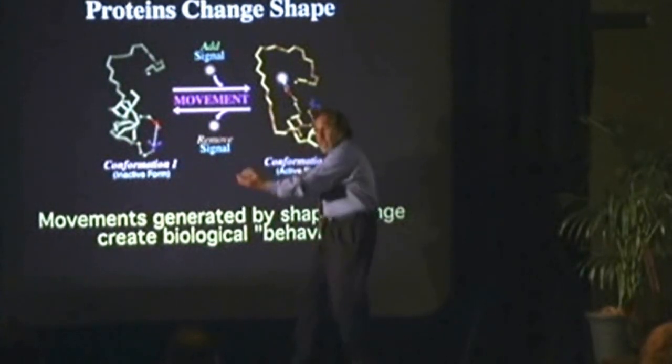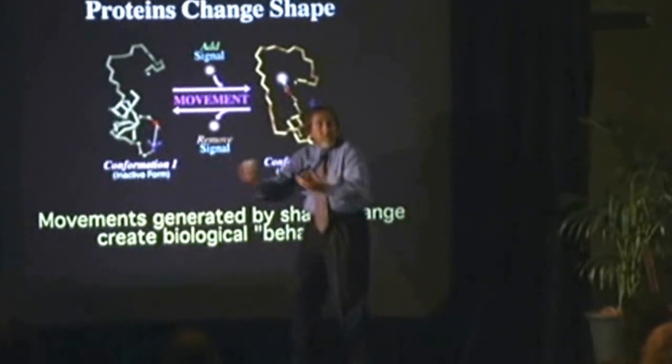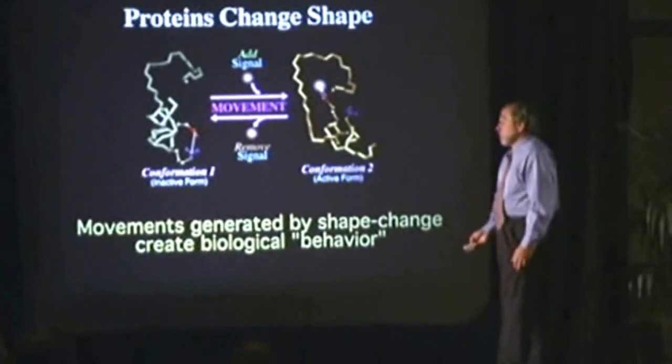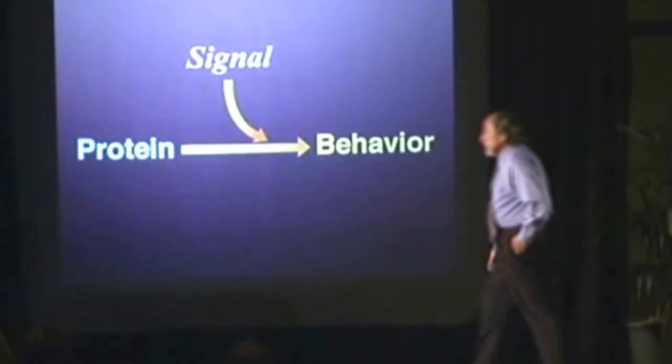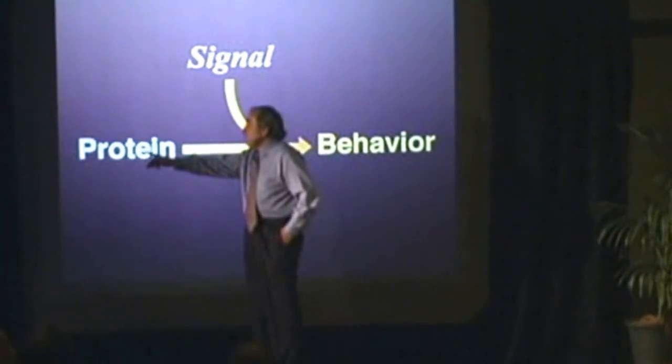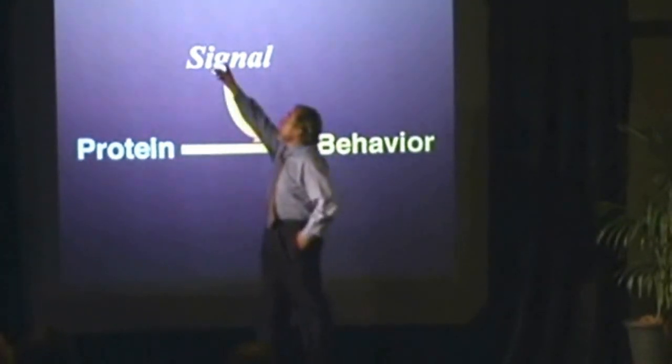There are two different shapes to the protein: an active and an inactive form. The activity is controlled by the signal. Proteins provide for your physical structure, but proteins also provide for your behavior. Your behavior is the movement, the actions that you express in your life, and that movement comes from the movement of protein.